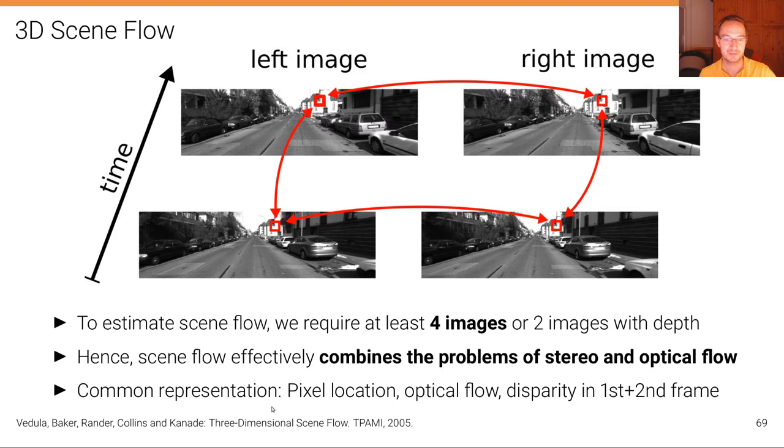And a common representation that's used for estimating scene flow from images is the pixel location in the reference camera, which is the left camera in the first time step in this case, the optical flow towards the next time step.